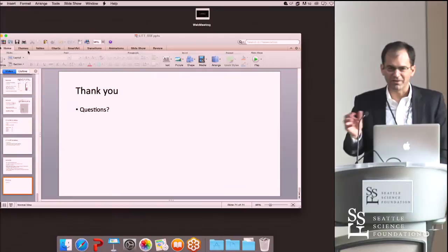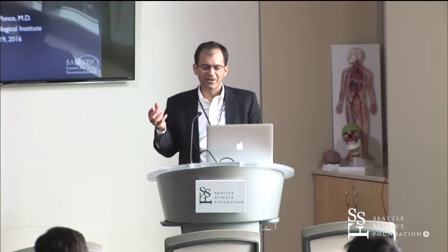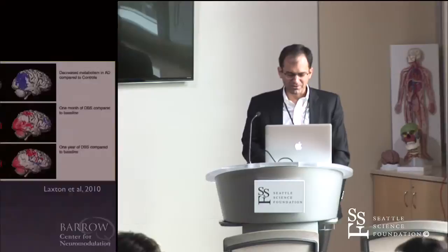Dr. Rebus really shows the networks. You can see those white matter tracks, which are circuits. And what deep brain stimulation and neuromodulation is all about is nodes and circuits — addressing the motor circuits, the mood circuits, the cognitive circuits. He talked a lot about the anterior nucleus.